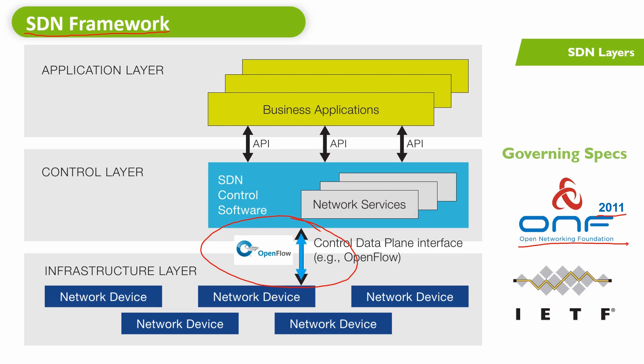OpenFlow works on a standard API defined between the control plane and the data or forwarding plane. With OpenFlow, the brain or controller can manipulate changes in the routing table and the routing algorithms used by the forwarding plane. This allows remote configuration of packet forwarding tables by adding, modifying, and removing packet matching rules and actions in the data forwarding plane. OpenFlow needs to be supported by both the controller and the forwarding plane.